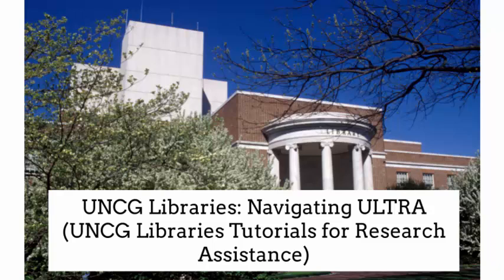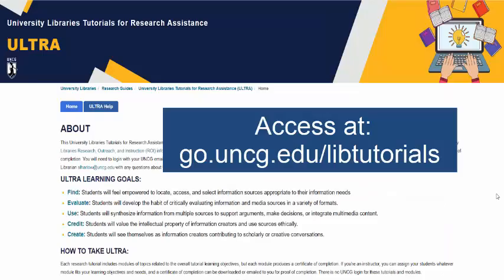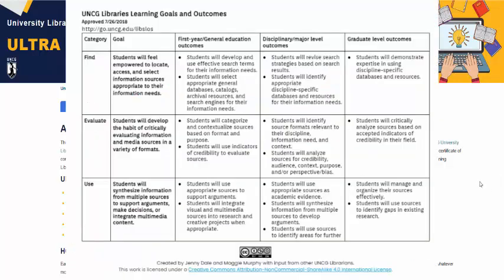Hello and welcome to a quick navigation tutorial about the University Libraries Tutorials for Research Assistance, or ULTRA. ULTRA was created to assist you in all stages of the research process. It is connected to the research process and to UNCG University Libraries Research, Outreach and Instruction, or ROI's Information Literacy Student Learning Outcomes.